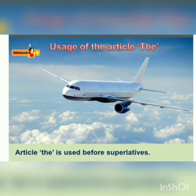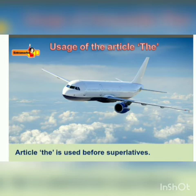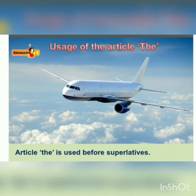Article 'THE' is used before the superlative degree. For example, 'Air transport is the fastest means of transport' — 'fastest' is the superlative degree, the third degree of the adjective (positive, comparative, superlative). Similarly, 'the oldest', 'the most beautiful' — 'most' is also superlative. Before the superlative degree, you have to use 'the'.